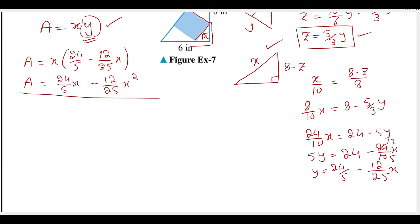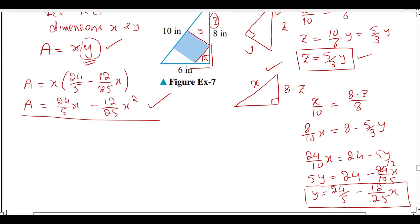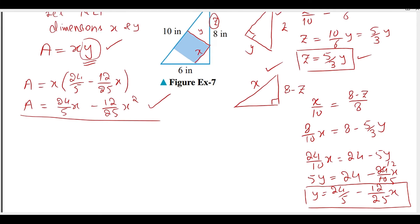It is not the maximum value yet. Now we have a function. If we see it, y is the value — this is the area function in terms of x. What can x be? The minimum value: either it will be positive or 0. The minimum value will be 0 — it will not be negative because it is a length. Now what can the maximum value be?